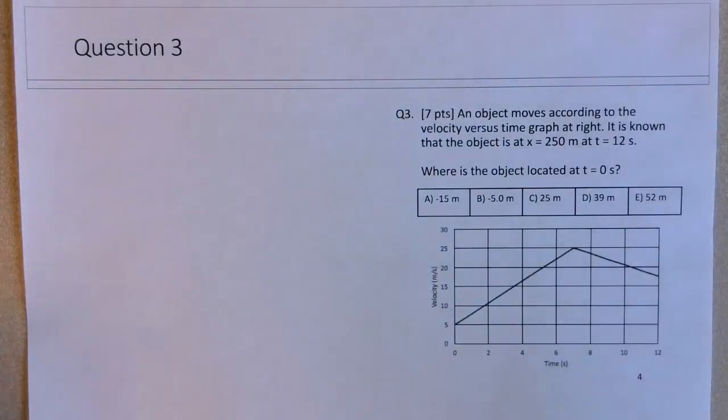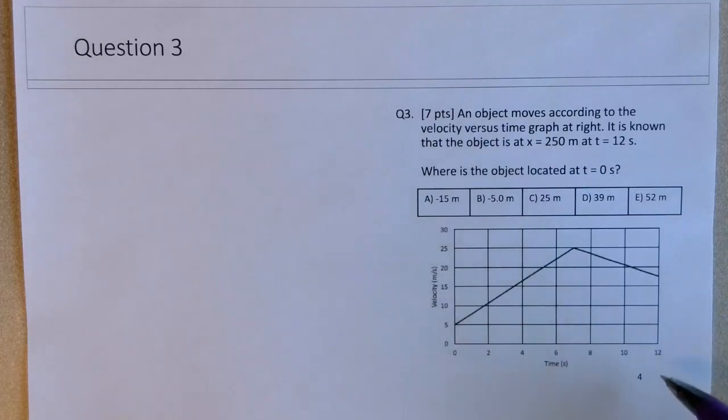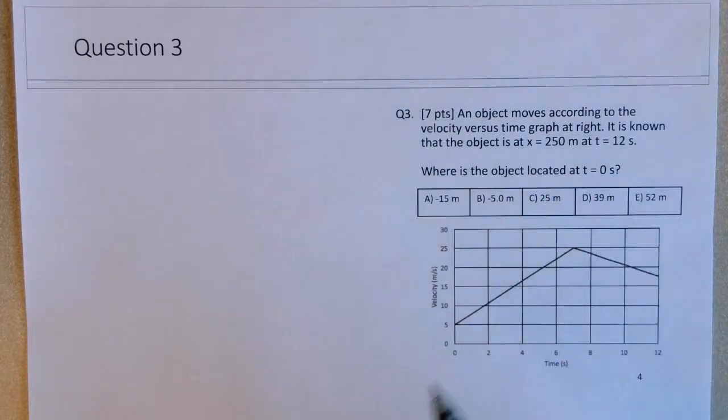Okay, so question 3 of the final exam review. We're looking at a kinematics question related to kinematic graphs. This is a velocity time graph, looking at an object that moves according to this velocity versus time graph. It's known that the object is at x equals 250 meters at t equals 12 seconds, and we want to know where the object is located at t equals 0 seconds. So the question requires you to work backwards somewhat.